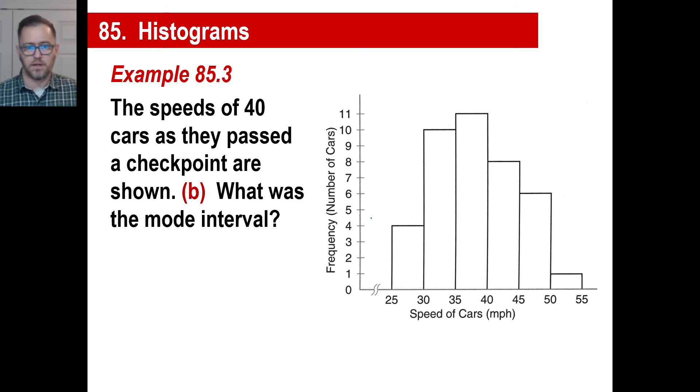The second question, what was the mode interval? In other words, which one has the most, and the interval, according to this histogram, is between 35 miles an hour and 40 miles an hour.